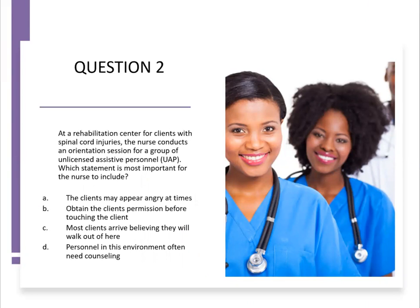Let's try another question. At a rehab center for clients with spinal cord injury, the nurse conducts an orientation session for a group of UAPs. Which statement is most important for the nurse to include? Since it says 'most important,' we're going to use all five steps of the decision tree. The topic here is priority UAP education.